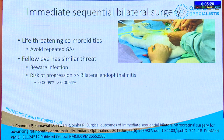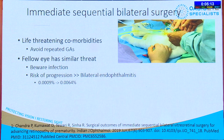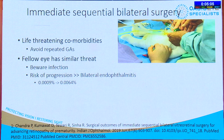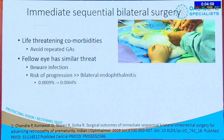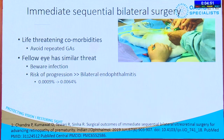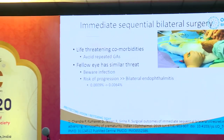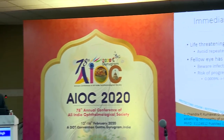One important point is to ensure you have a good pediatric anesthetist who knows what they're doing — that makes a huge difference. One tip from our anesthetist is to keep the baby warm — they wrap them up like a mummy, and the baby wakes up immediately with no trouble with anesthesia. Of course, the fellow eye has a similar threat — you must be aware of infections. But you must weigh the risk of disease progression against the risk of bilateral endophthalmitis from simultaneous surgery.